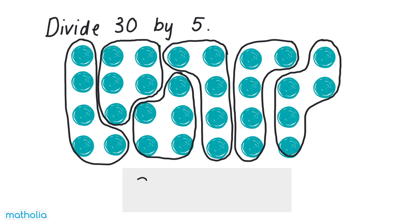There are six groups of five dots, so thirty divided by five equals six.